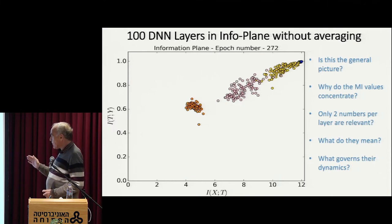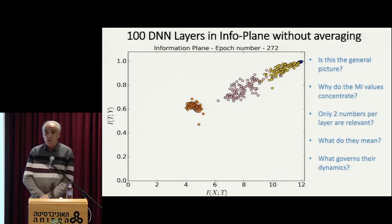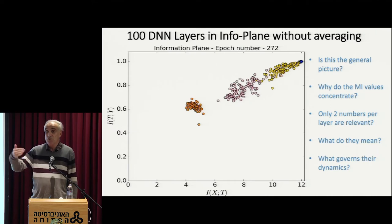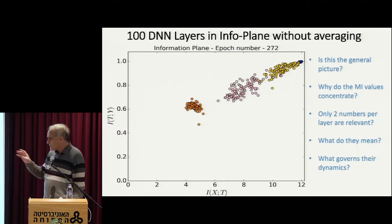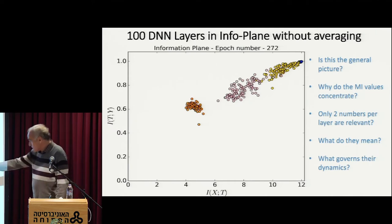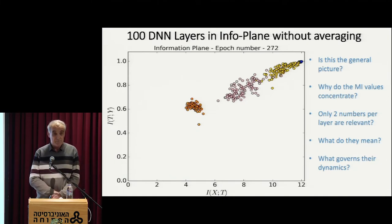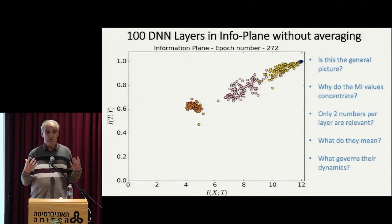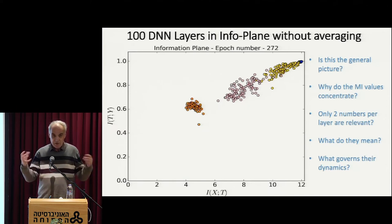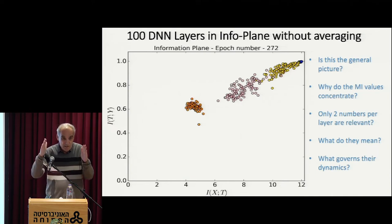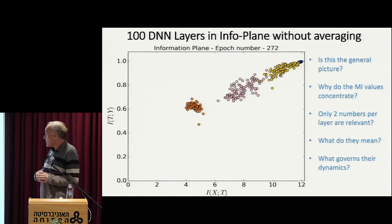Essentially the main theorem is that ITY completely dominates what we call the generalization error — essentially telling me how well you do outside of your training data. What is less obvious is that IXT is actually dominating the sample size. This is some sort of dimensionality — it's not the VC dimension or anything like this. Two to the IXT behaves a little bit like the dimension — it's exponential in this information.